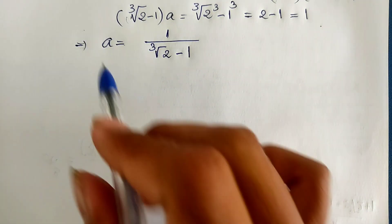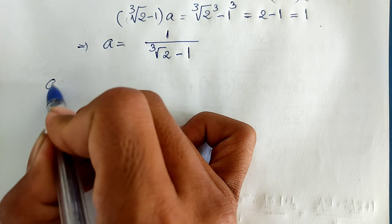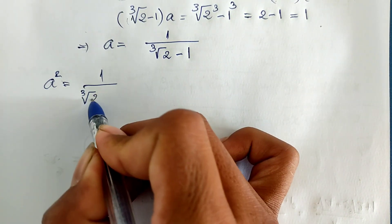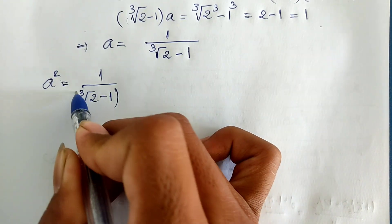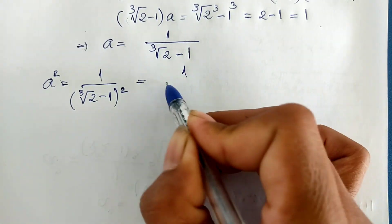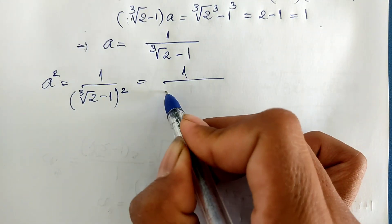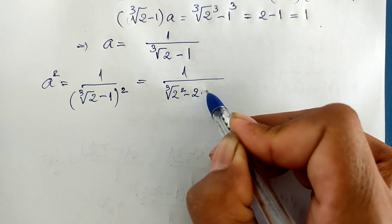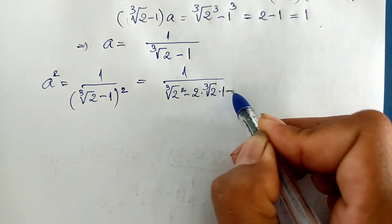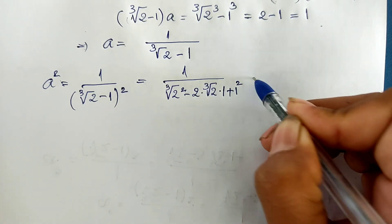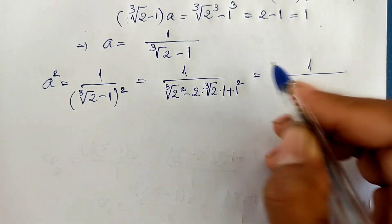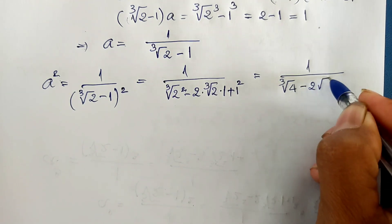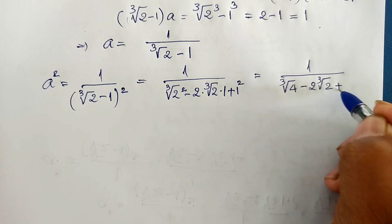Now I raise both sides of this equation to the square. So I get A squared equals 1 divided by cube root of 2 minus 1, all squared. Expanding the denominator: cube root of 2 squared minus 2 times cube root of 2 times 1 plus 1 squared, which gives 1 divided by cube root of 4 minus 2 times cube root of 2 plus 1.